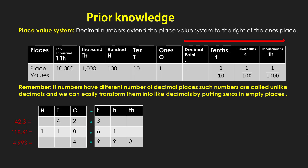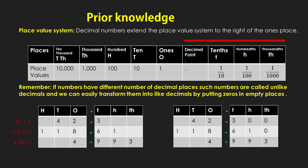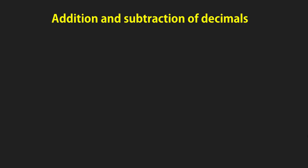These numbers have a different number of decimal places and are called unlike decimals, but we can convert them to like decimals by putting zeros in the empty boxes. As we can see in the table, by putting zeros in the empty boxes, these numbers now have the same decimal places — all three numbers are now like decimals. We already learnt decimal numbers; now let us learn how to add and subtract decimal numbers.